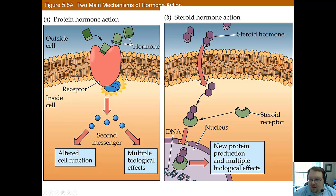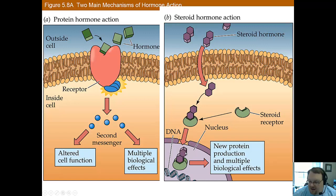Here we have an image of these two mechanisms. You see the protein hormone connecting with the receptor on the outside of the cell wall, with second messengers dispersing and altering cell function. Whereas for steroid hormones, they go right through the membrane because they're lipid soluble, connect to a steroid receptor inside, and affect the way that the DNA is being transcribed.